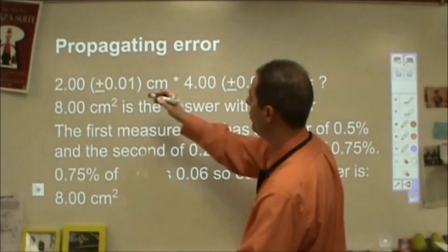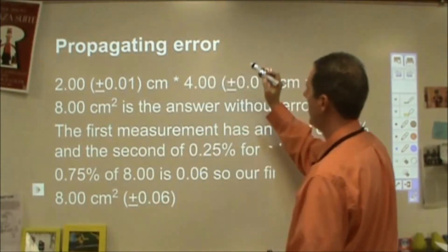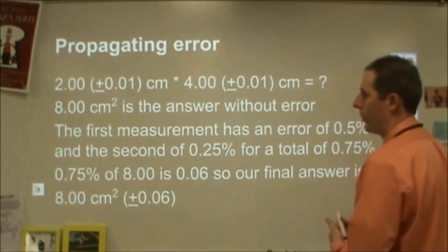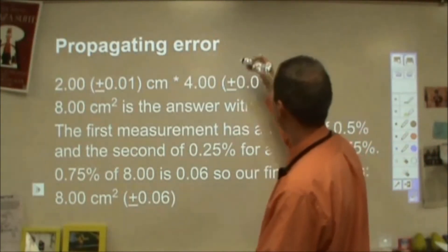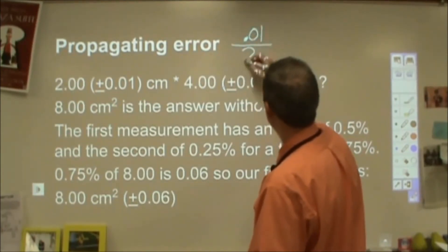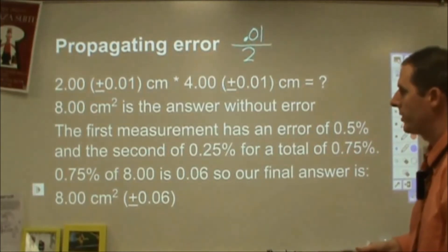So here I have 2.00 (±0.01) cm times 4.00 (±0.01) cm. 8 is my answer, 2 times 4. But what do I do with these uncertainties? What you do is you take 0.01 and divide it by the value of 2, and then I change that into a percentage.